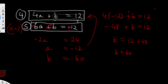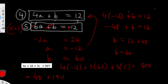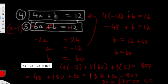Taking equations 4 and 5 together: subtracting gives -2a = 24, so a = -12. Substituting back into equation 4: 4(-12) + b = 12, so -48 + b = 12, giving b = 60. Substituting a = -12 and b = 60 into equation 1: 4(-12) + 3(60) + 3c = 807, so -48 + 180 + 3c = 807, giving 132 + 3c = 807, so 3c = 675, and c = 225.